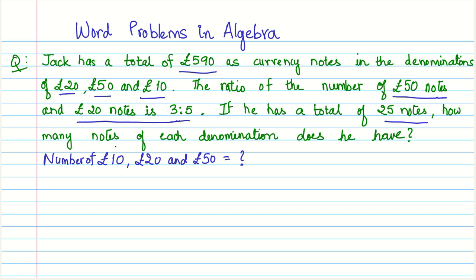We can safely assume here that the number of £50 notes is equal to 3x and the number of £20 notes equals 5x. They are in the same ratio, so we just need to find out x.